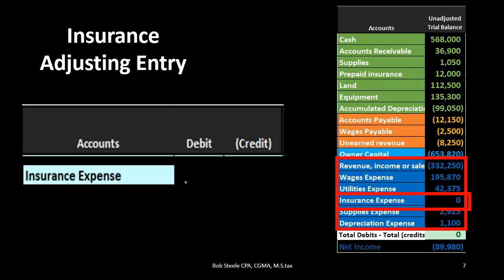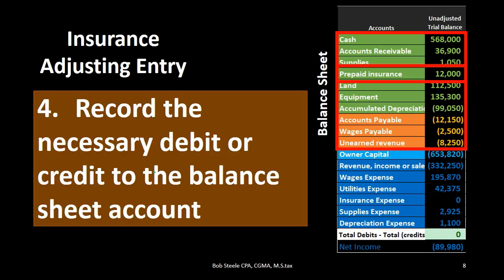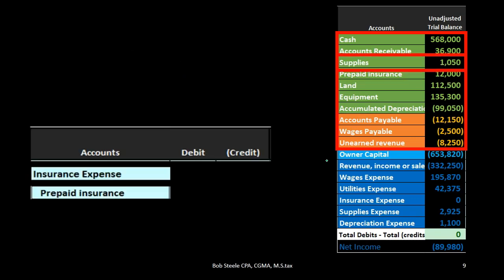We can put the expense on top. We already knew the two accounts before this, but we didn't know which one was going to be debited or credited — now we do, and we indicate that by putting this account on top. Step four: record the necessary debit or credit to the balance sheet account. Now that we know which way the income statement account is going — in our example the expense is going up with a debit — we're going to credit whatever the other account was, in this case prepaid insurance. By default we now know what's going to happen to the balance sheet account.